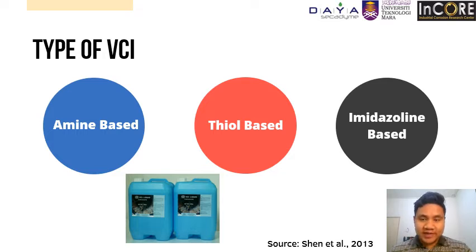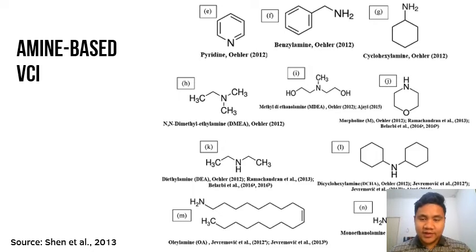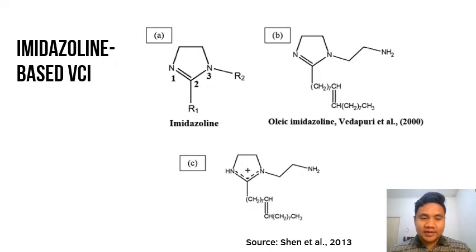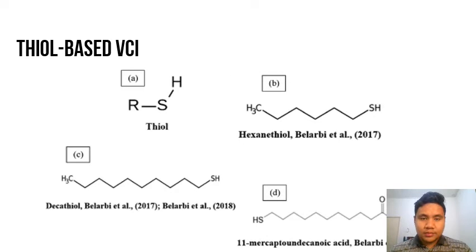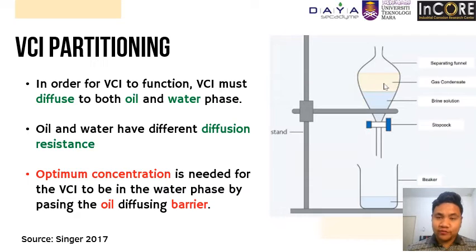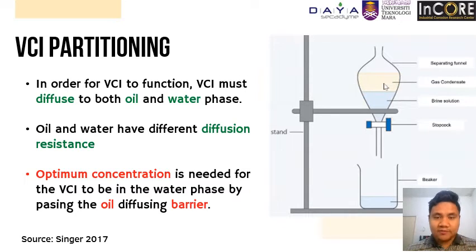There are three types of VCI base available in the market. The first type is amine-based, and you can see the chemical compound of amine-based VCI here. The second is imidazoline-based VCI. For my experiment, the thiol base is used. In order for VCI to function, it must diffuse to both the oil and water phase, which have different diffusion resistances. This means not all VCI will diffuse and its efficiency drops. Therefore, it is important to determine the optimum concentration so that convenient corrosion inhibition of the pipeline internal surface can be achieved. We must not forget that VCI is an expensive material, so the correct dosage is crucial.